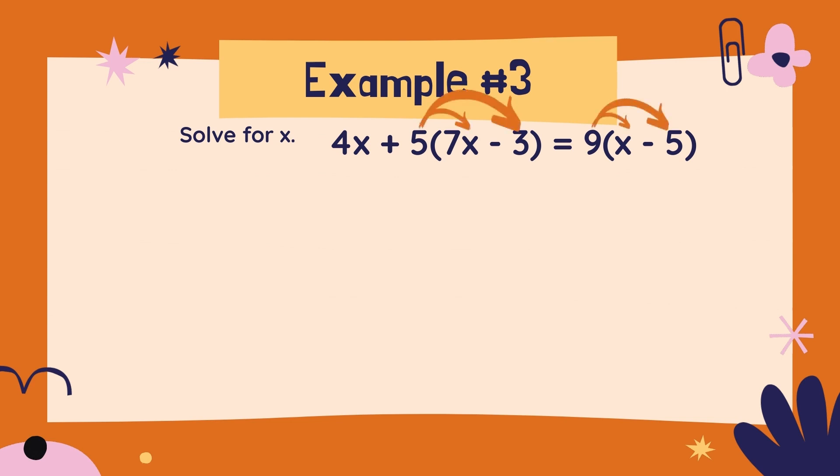5 times 7x is 35x, and 5 times negative 3 is negative 15. And then 9 times x is 9x, and 9 times negative 5 is negative 45. Let's rewrite the whole equation with those changes.